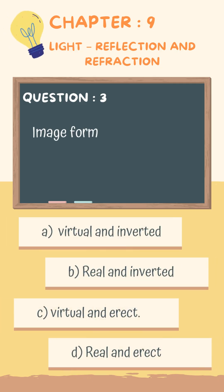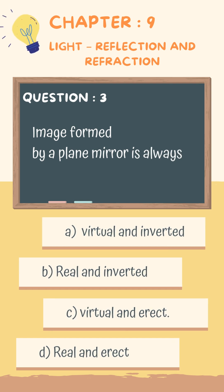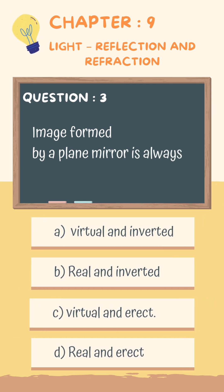Question 3. Image formed by a plane mirror is always: A. Virtual and inverted, B. Real and inverted, C. Virtual and erect, D. Real and erect.